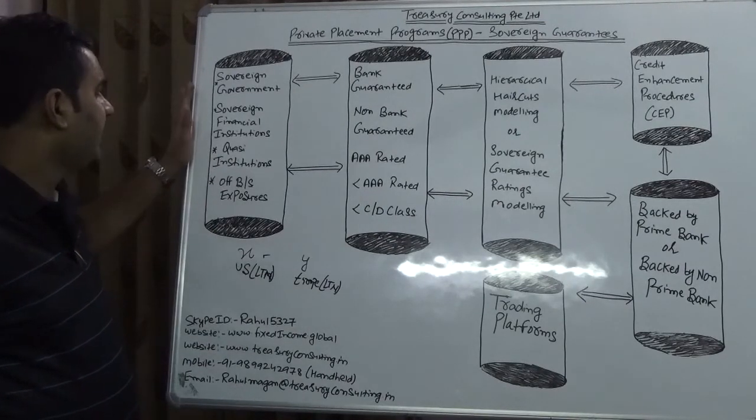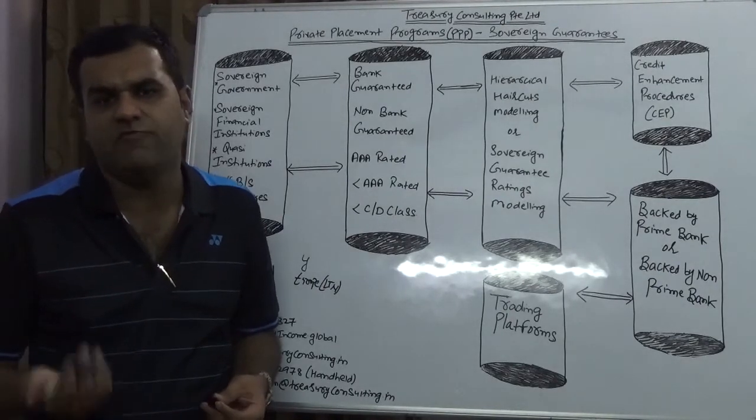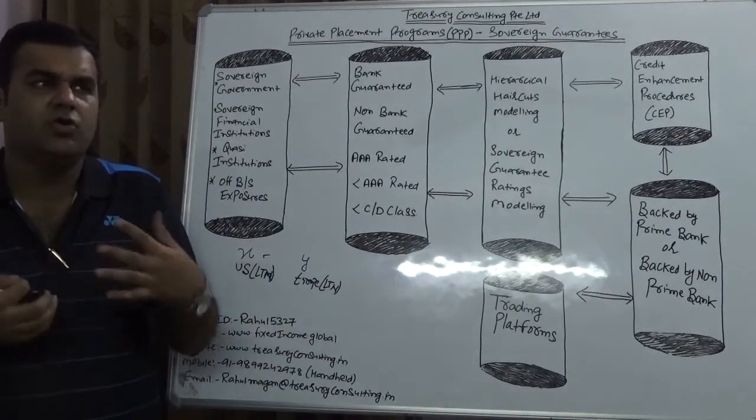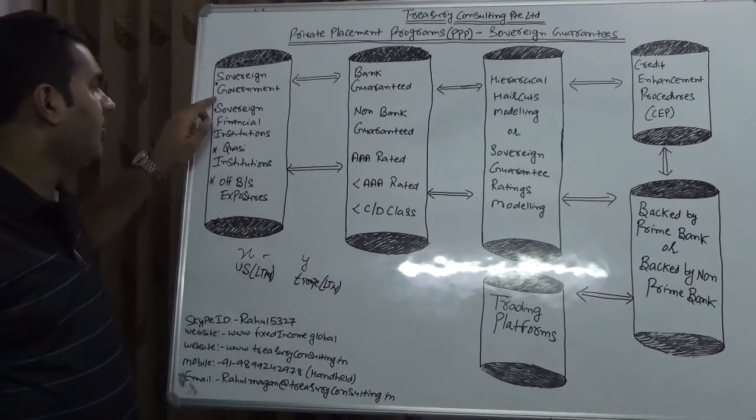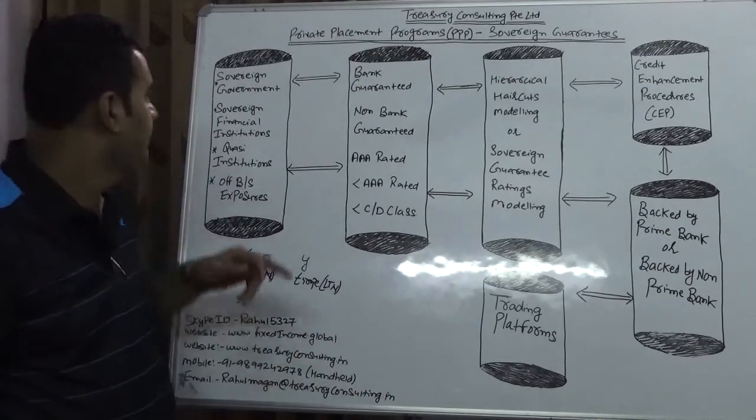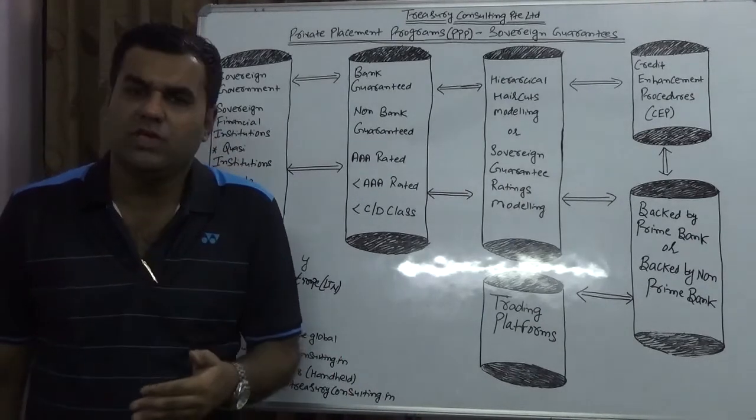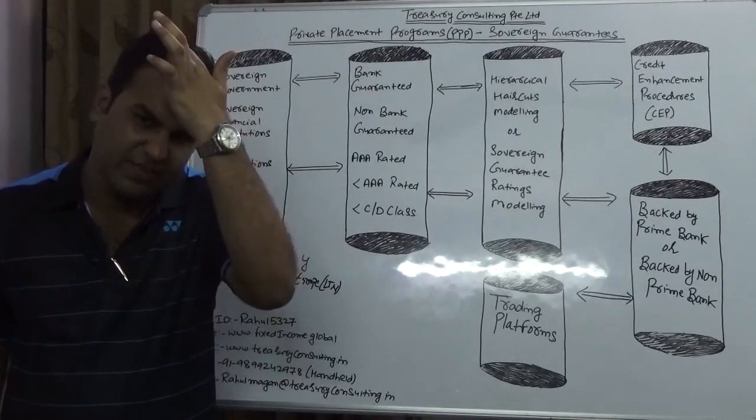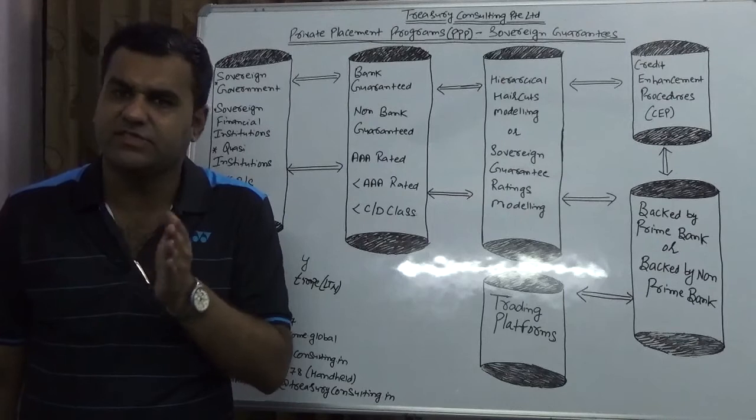Basically, what are the various types of Sovereign Guarantees which you have? One which is on balance sheet, one which is off balance sheet. Unfortunately, when people are talking about Sovereign Guarantees, they do not know that they do have off balance sheet also. These are Sovereign government which are directly issued by the government, could be India, US, Europe. We have Sovereign financial institutions. If you talk about US, you have Fannie Mae, you have Freddie Mac and different government institutions of United States.